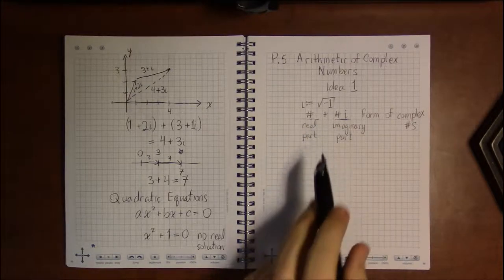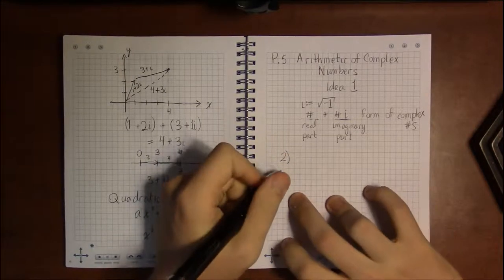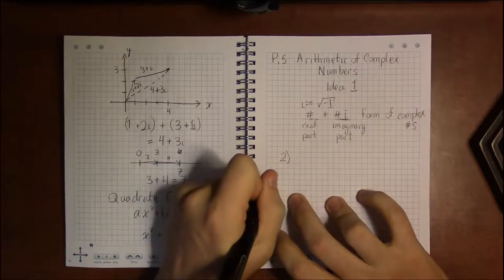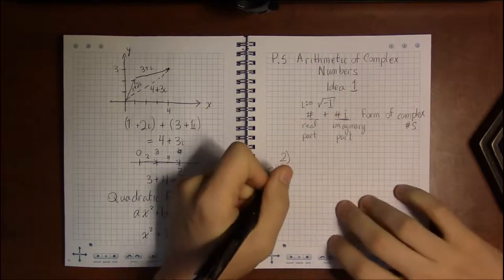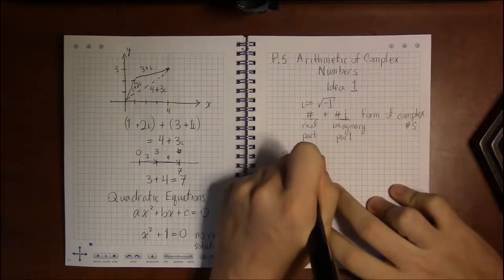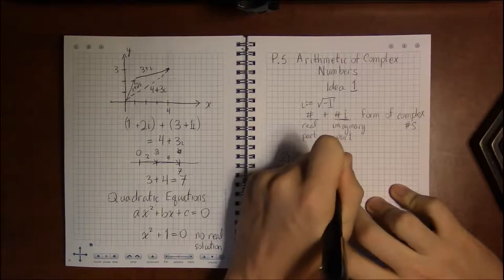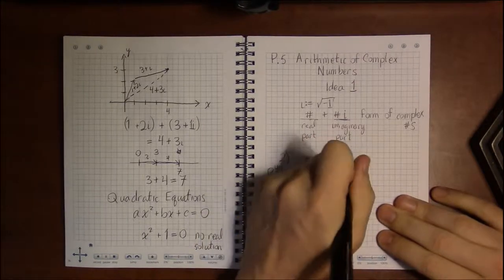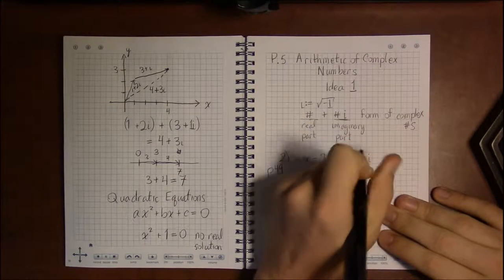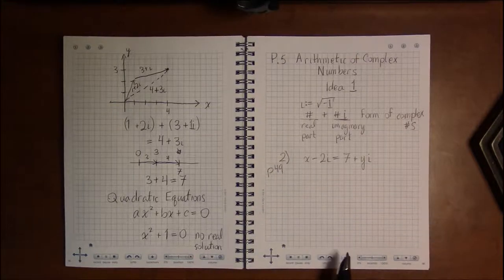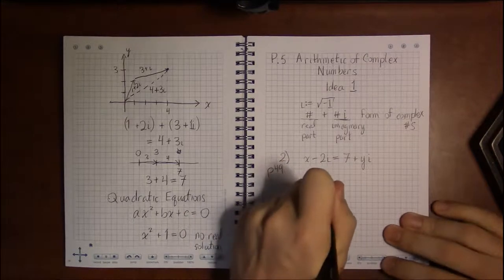So it turns out, before we even get to something like addition or subtraction, we need to talk about what does it mean for two complex numbers to be equal to each other. For example, on problem 2 on page 49, they say that x and y are real numbers, and find out the values for x and y.